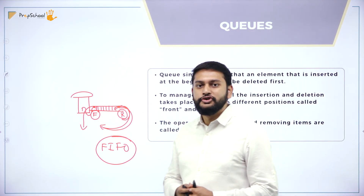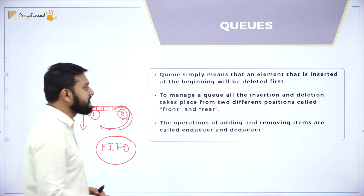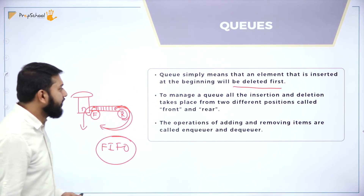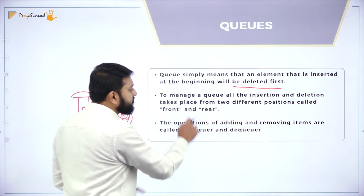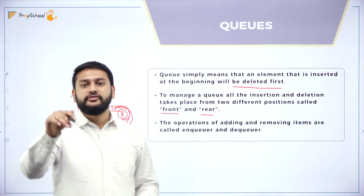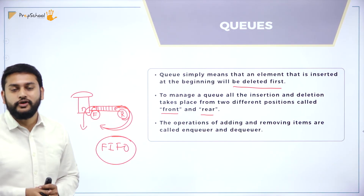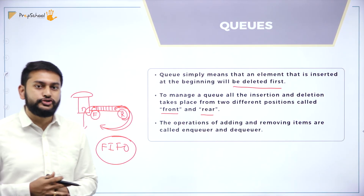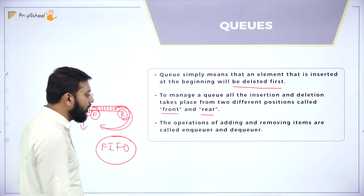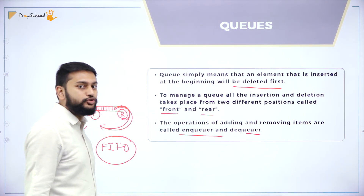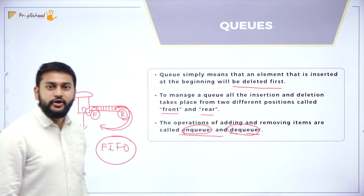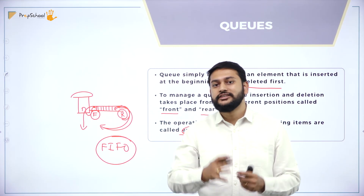A queue simply means that an element inserted at the beginning will be deleted first. To manage a queue, all insertions and deletions take place from two different positions — front and rear. The insertion will happen at the front and deletion will happen at the rear according to the normal queue concept. The operations of adding and removing items are called NQ and DQ. When you insert an element, that operation is NQ; when you delete an element, that operation is DQ.